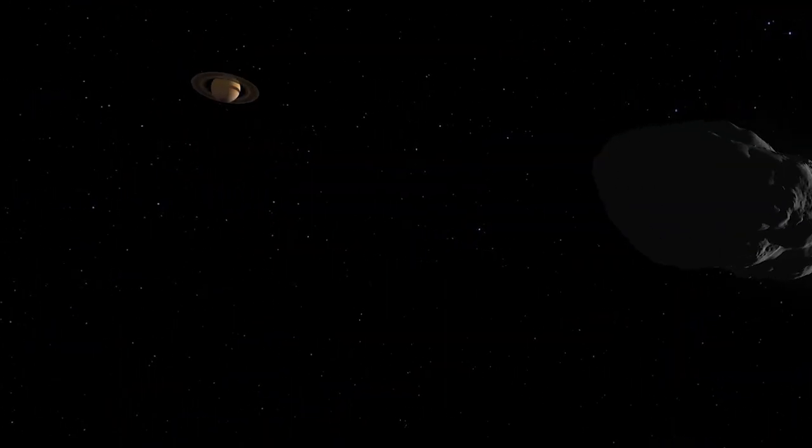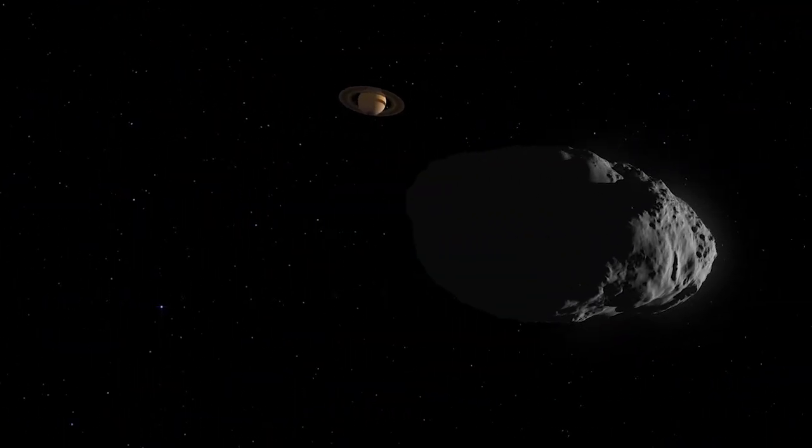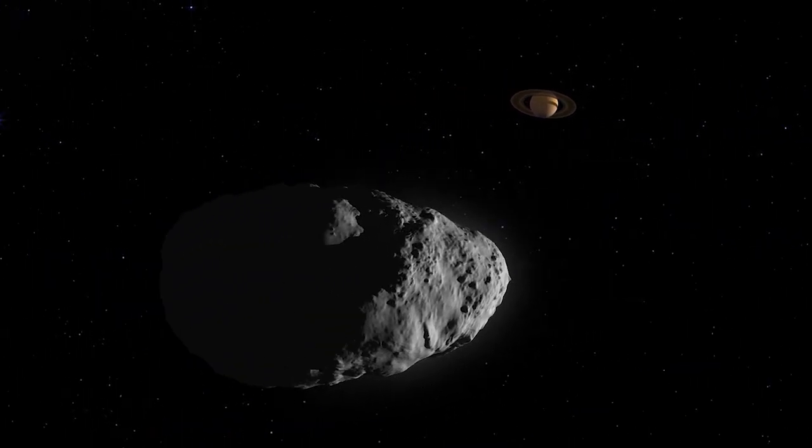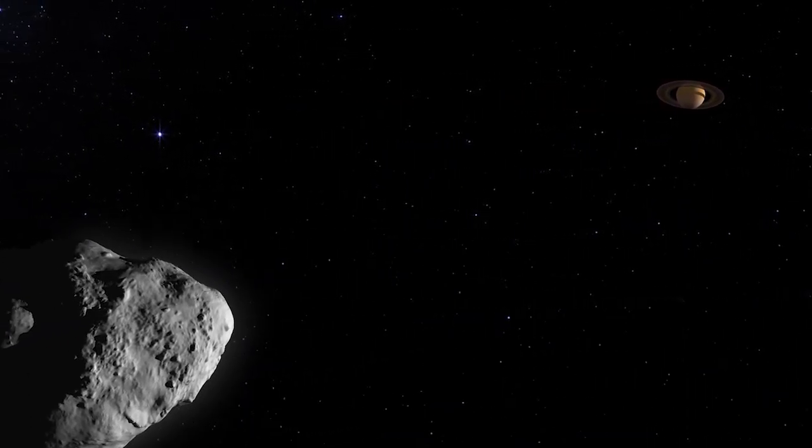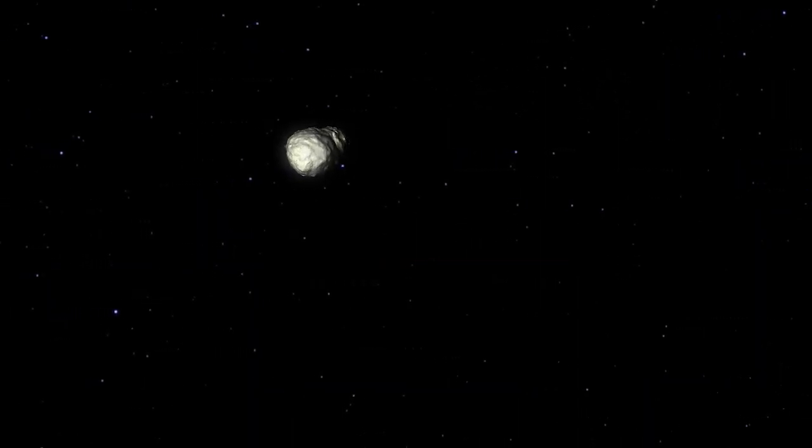Through millions of years, Bennu's orbit gradually tightens until it interacts with Saturn's gravity, altering its trajectory, and hurling it into the inner solar system.